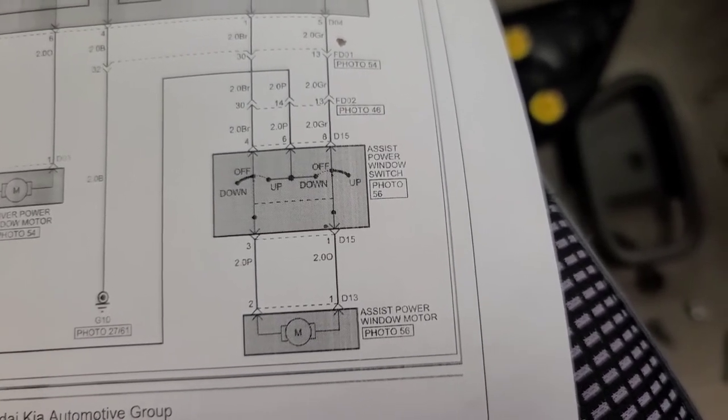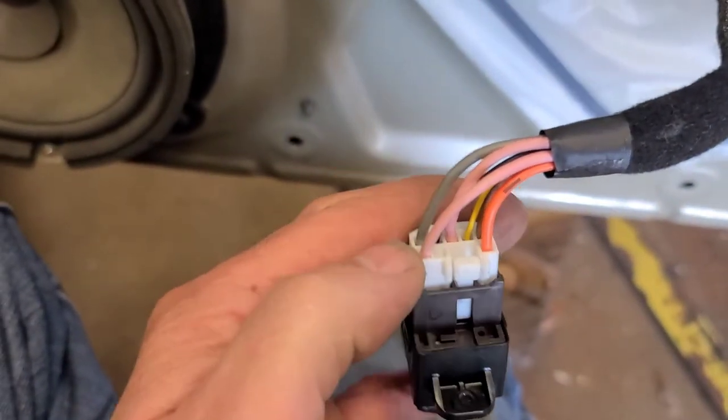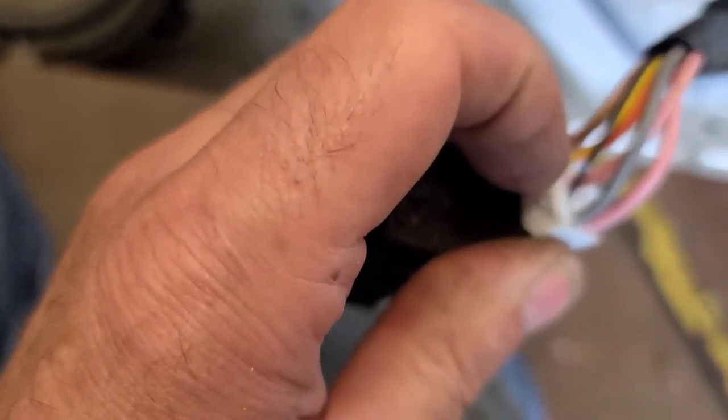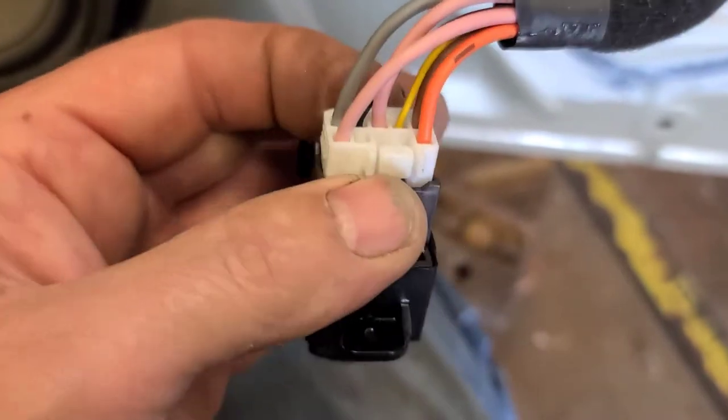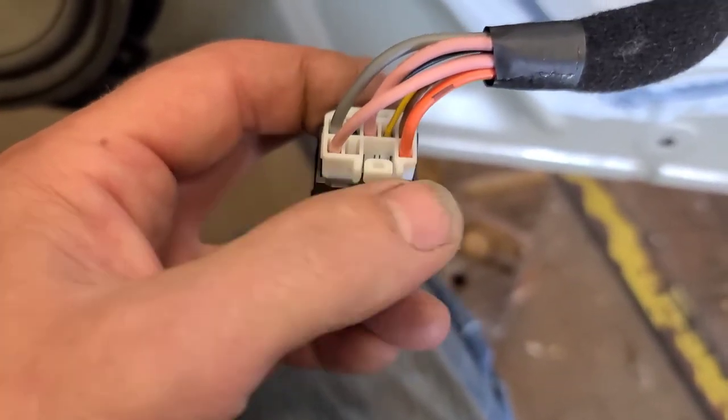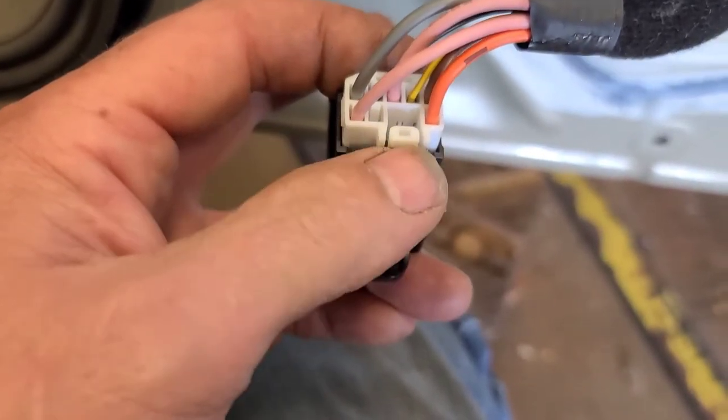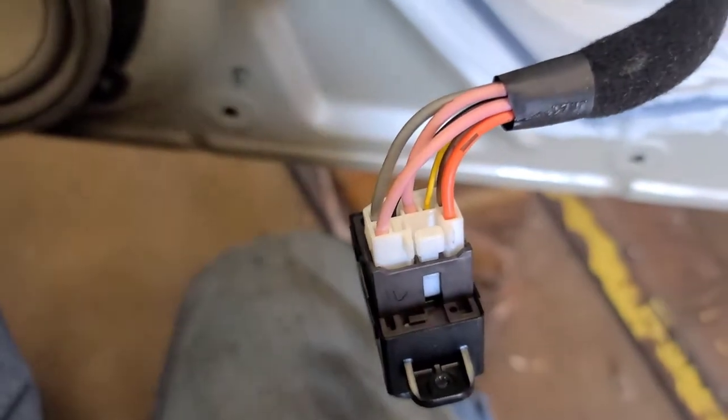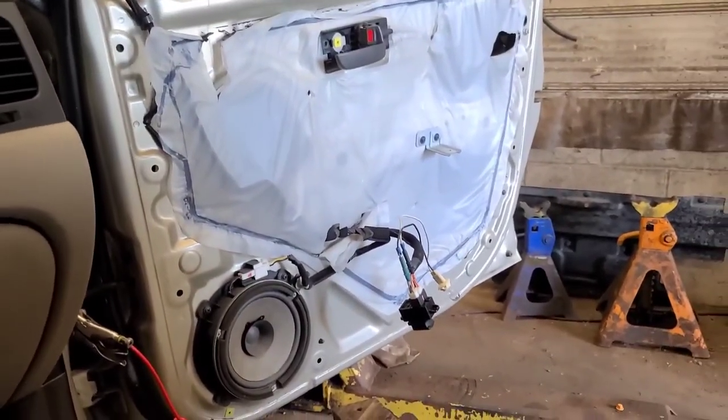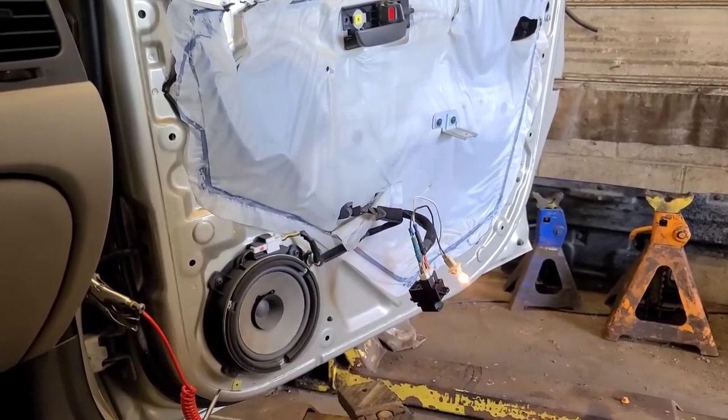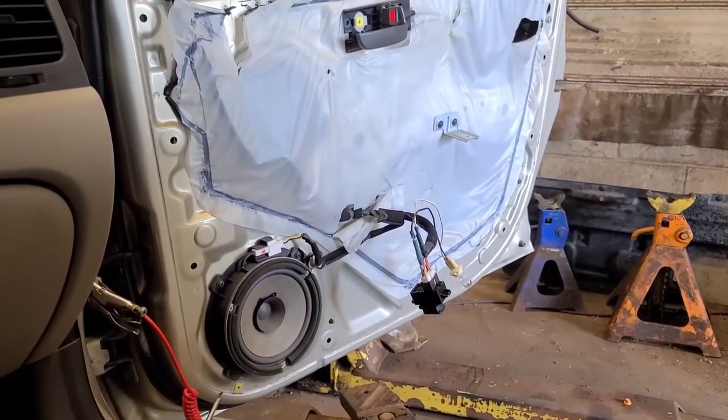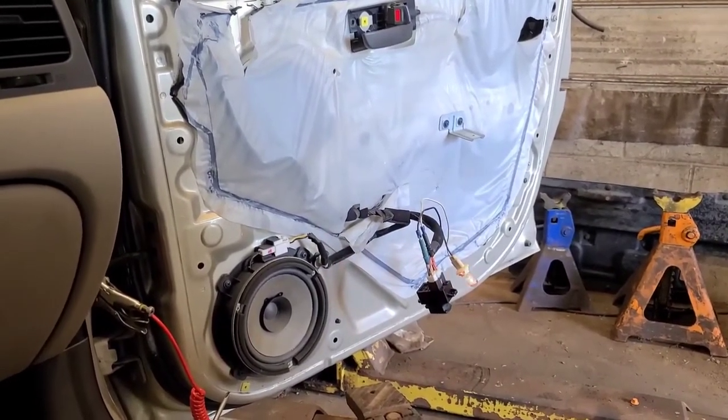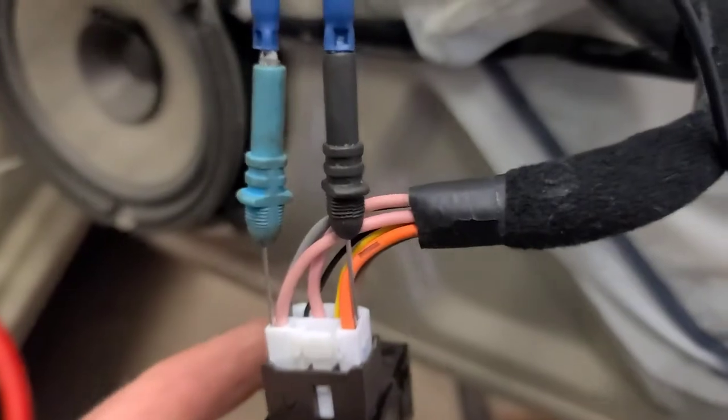Here's the wires at the switch. Pin one and three, which is orange and pink, are outputs to the motor. Pin six here should be power coming in. I'm just going to go across the orange and pink with a test light and see if it lights the test light in either direction. I've got my test light connected across there and from the master switch, it lights the light going up, but does not light the light going down. And it doesn't light the light going up or down from this switch as well.